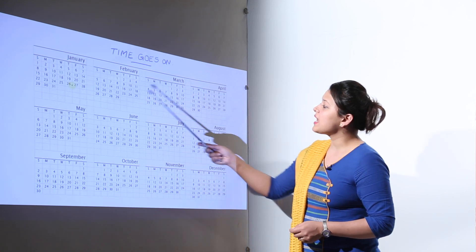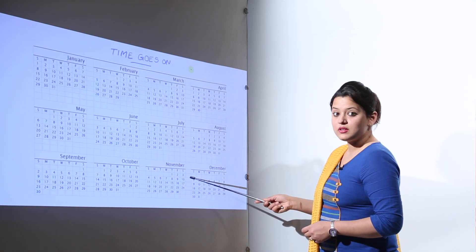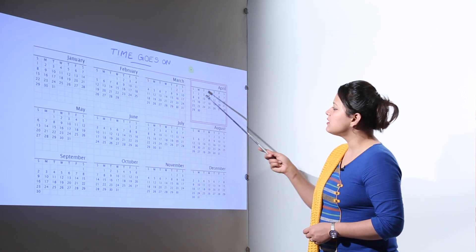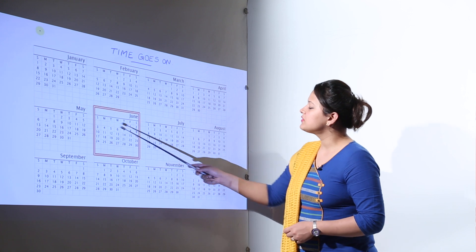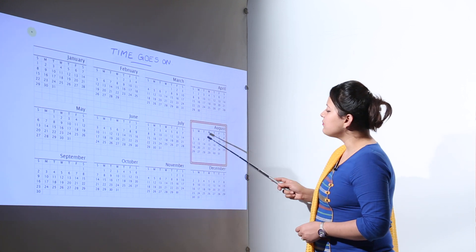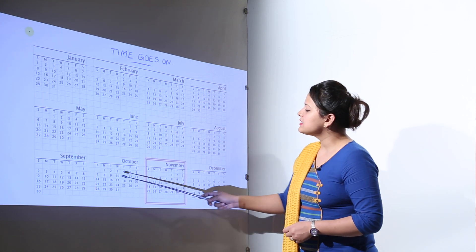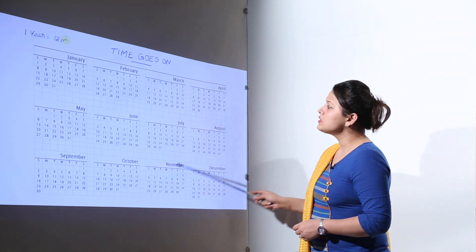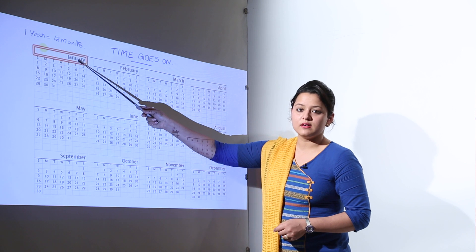Calendar is like this. It has 12 months in total. So let us count. We have the first, second, third, fourth, fifth, sixth, seventh, eighth, ninth, tenth, eleventh and twelfth. So we have total 12 months in one year.